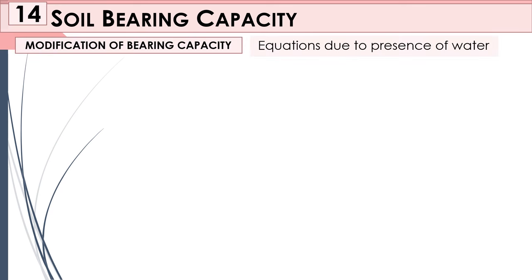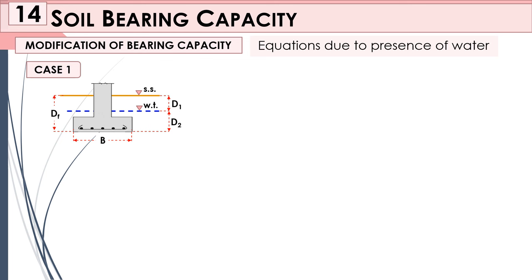Now let us talk about the modification of bearing capacity due to the presence of a water table. This means we now consider a water table in the soil. We have four or five cases for the modification of bearing capacity. Case 1: the depth of your footing from the soil surface to the bottom of the footing is df; the distance from the soil surface to the water table is d1; and from the water table to the bottom of the footing is d2.